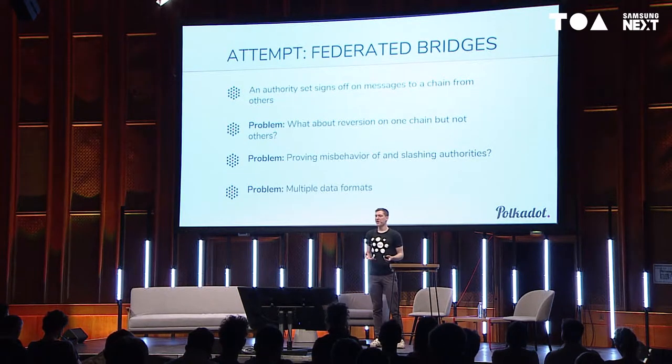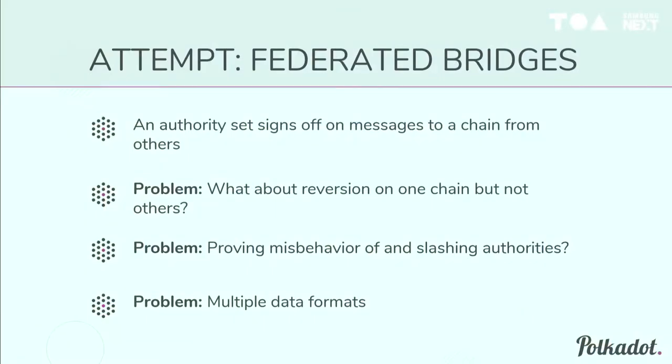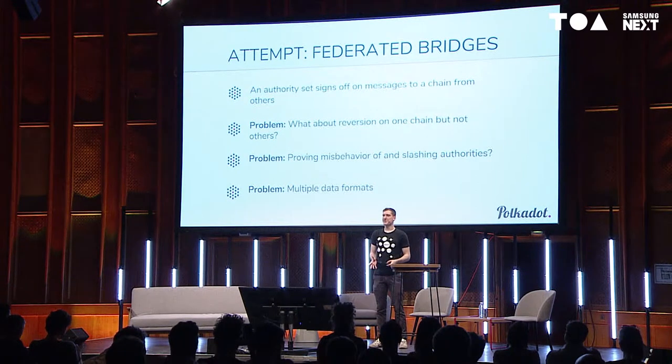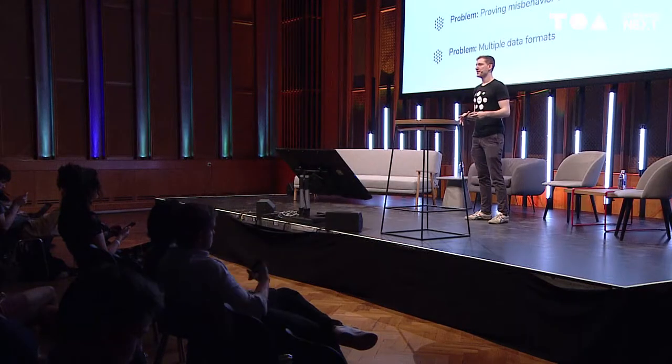One attempt at interoperability is federated bridges, where an authority set on a chain ferries messages to another chain. One main problem is what happens if one chain gets reverted but the other doesn't — a fundamental security problem I'll discuss. The other problems are proving misbehavior of authorities and slashing them. Misbehavior should always be detectable, attributable, and slashable — you can remove people's funds when they misbehave. You also need some kind of bridge between the data formats of connected chains.